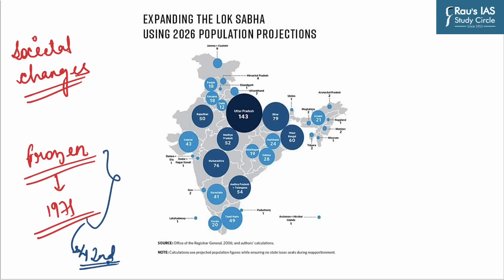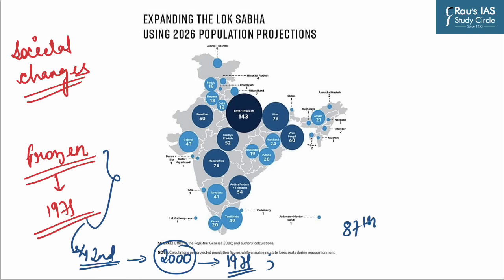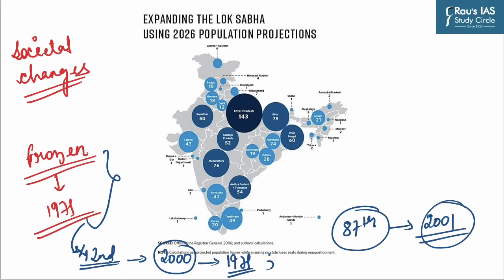To solve this, we should keep the distribution of seats among states frozen as it was in 1971 until all states stabilize their populations. The 42nd Amendment Act of 1976 froze the allocation of seats in Lok Sabha and division of each state into territorial constituencies till the year 2000 at 1971 levels. The 87th Amendment Act of 2003 provided for delimitation of constituencies on the basis of the 2001 census.